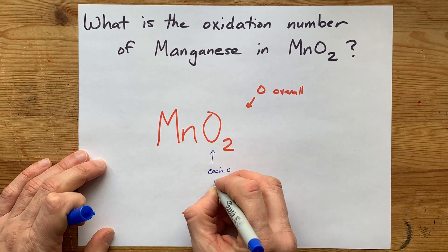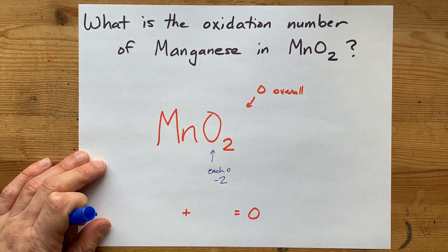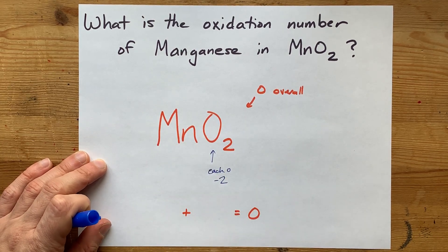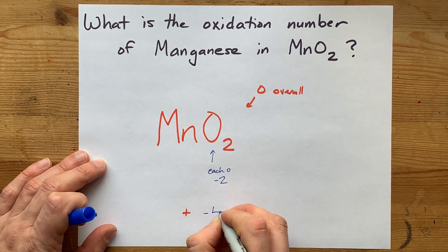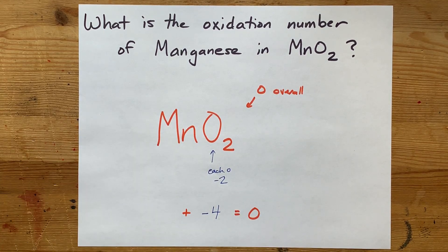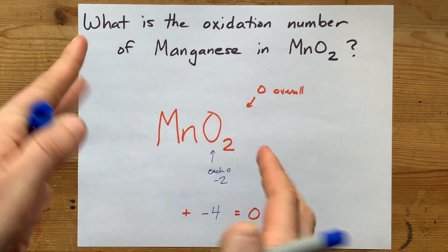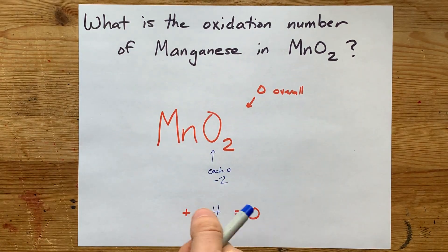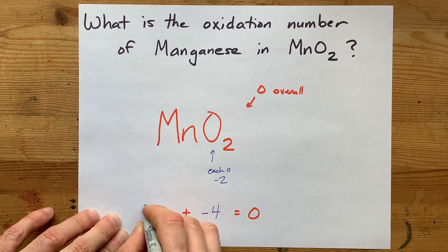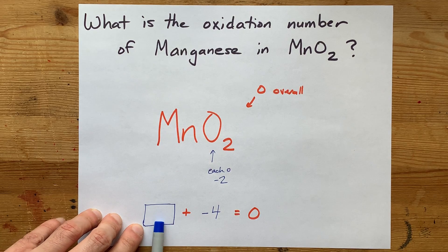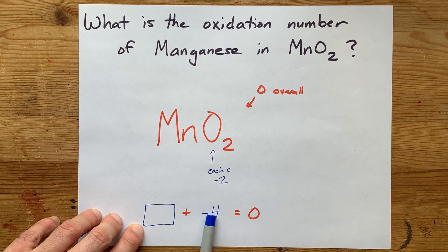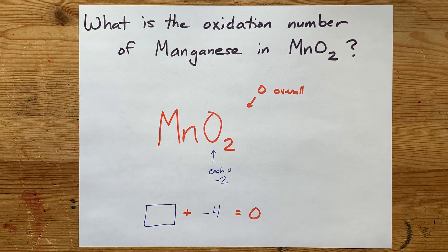Each O is going to be assigned an oxidation number of minus two, and there are two of them. Combined, those oxygens contribute minus four to the overall sum. So the question is: what would Mn have to be if its oxidation number plus negative four gives you zero?